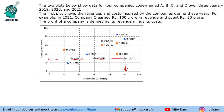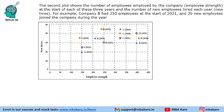The profit of a company is defined as revenue minus its cost. The second plot shows the number of employees employed by the company — employee strength at the start of each of these three years — and the number of new employees hired each year, i.e., new hires. For example, company B had 250 employees at the start of 2021 and 30 new employees joined the company during this year.